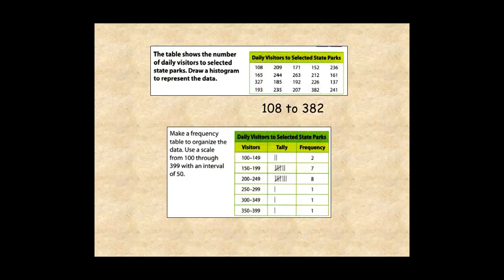Now go through the data adding tally marks to the frequency table. The first number is 108, so add a tally mark to the 100 to 150 unit interval. The second number is 209, so add a tally mark to the 200 to 250 unit interval.